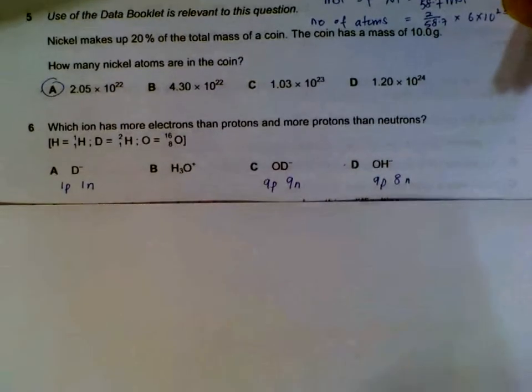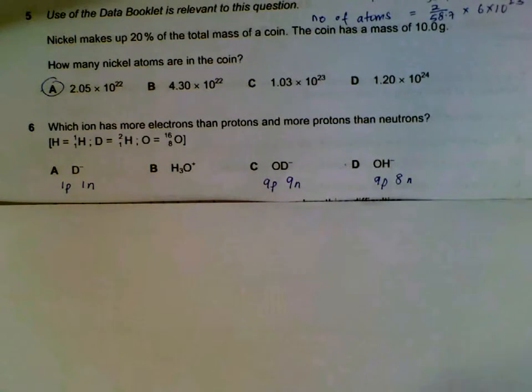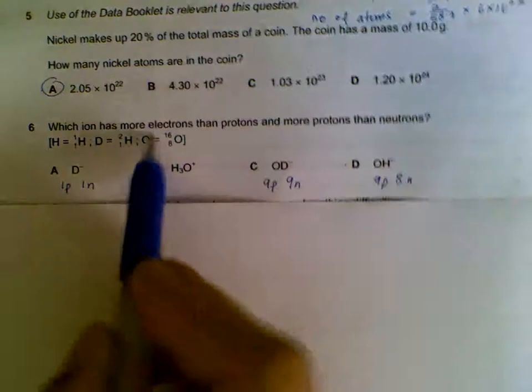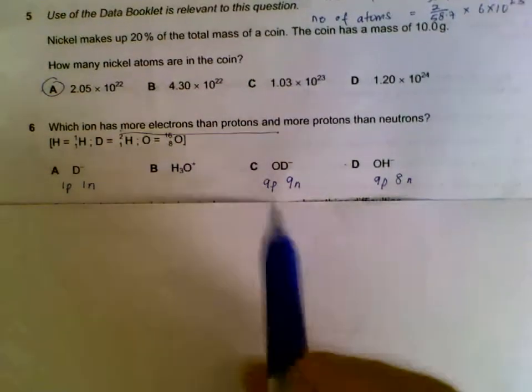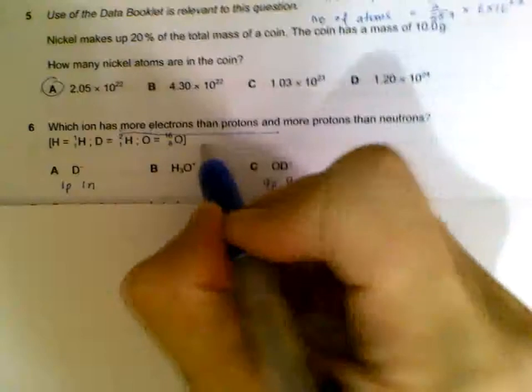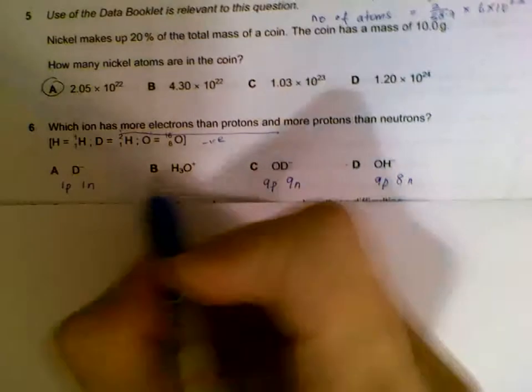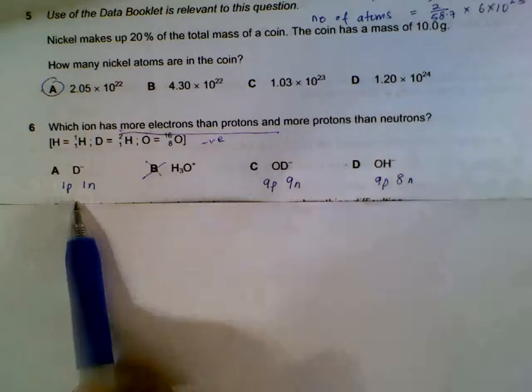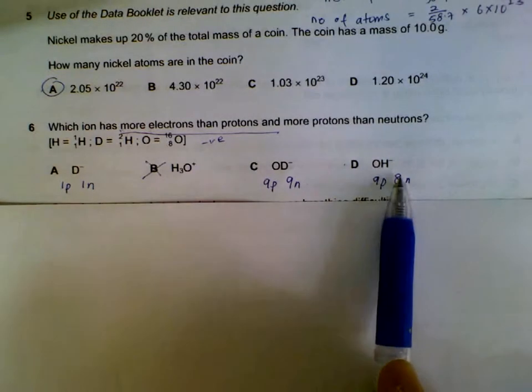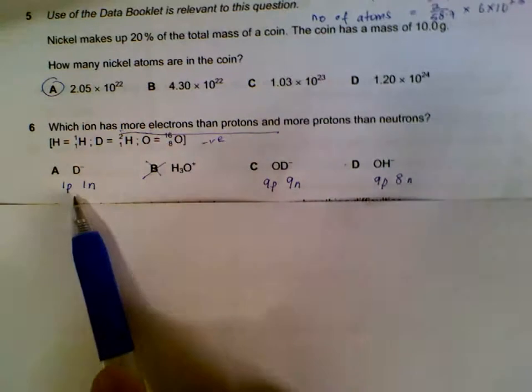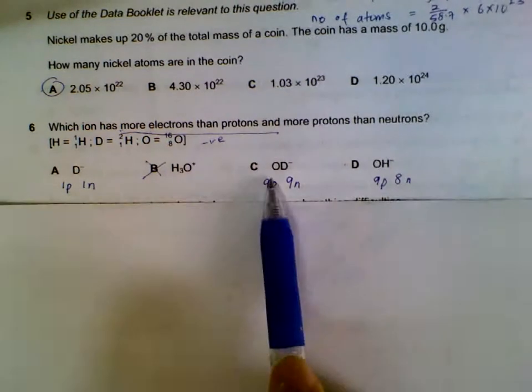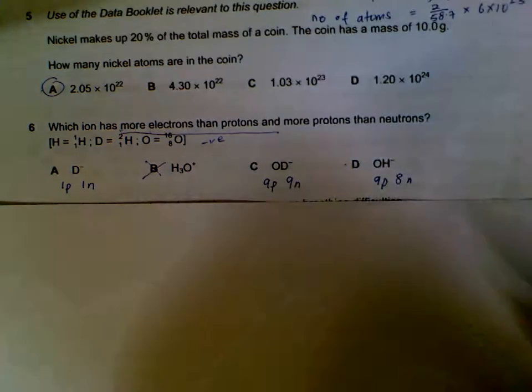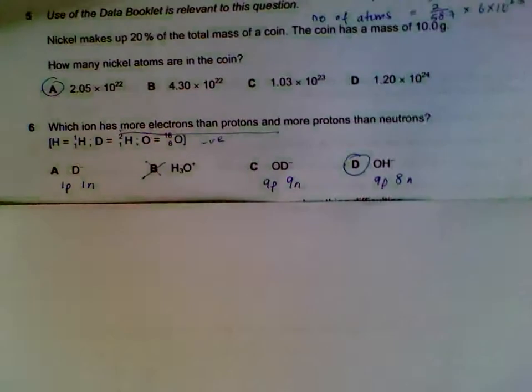Number six. Which ion has more electrons than protons and more protons than neutrons? First, we tackle the more electrons than protons. Since it has more electrons than protons, it will be negatively charged. That eliminates B straight away. Then we have three more options. We have to find out the protons and neutrons. If you calculate them out, you can compare your answers. Having more protons than neutrons will give us D, the hydroxide ion.